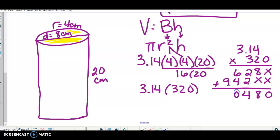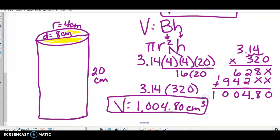Zero, eight, four, ten carry the one. Ten, one, two, one, two. And the volume of this cylinder is one thousand four point eight or point eighty centimeters cubed.